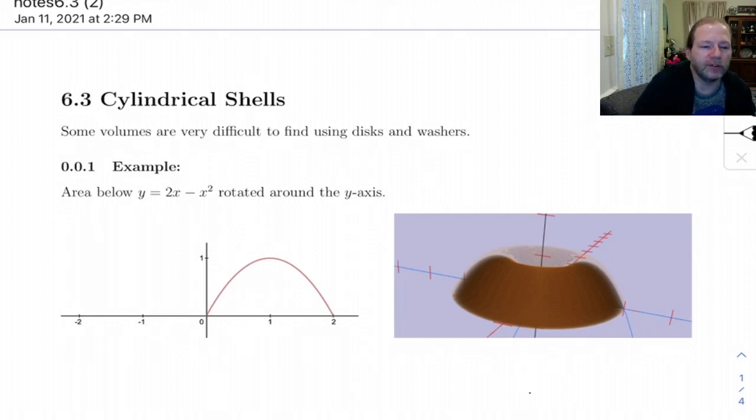In 6.3, we're going to look at doing volumes of revolution by cutting the solid object up into cylindrical shells. The reason we want to do this is because some volumes are very difficult to find if we just try to use disks or washers, and this is a good example here.